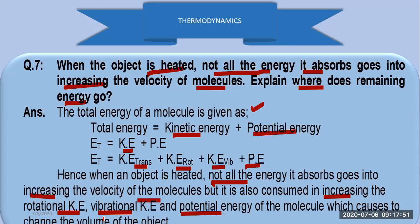The total energy of the molecule is given by kinetic energy plus potential energy. But kinetic energy is not a single type — it includes translational kinetic energy, rotational kinetic energy, and vibrational kinetic energy, since molecules of a gas or material also vibrate. There is also potential energy. So this amount of energy is converted into different types of energy.